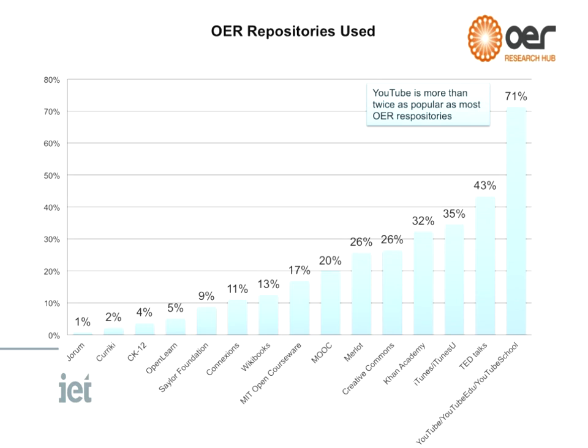This slide shows the repositories people reported using. YouTube is by far and away the most popular OER repository if you're willing to consider it as one. Then TED Talks, then iTunes U, and only then do we get into Khan Academy and Merlot — the more well-known core OER providers where OER is their mission. Quite low numbers for a lot of them. We didn't ask about local repositories, so people might have an institutional repository in their own college. But still, it wasn't really what I expected to see.